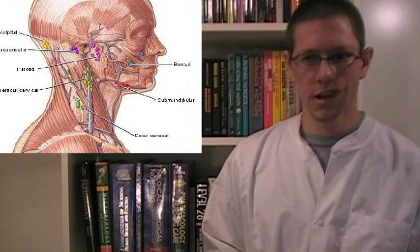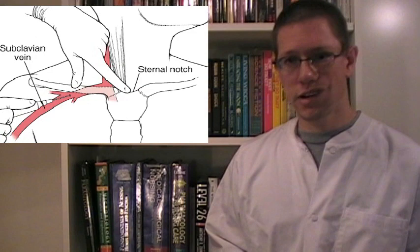There are two types of lymphoid organs, primary and secondary. The primary lymphoid organs supply the secondary lymphoid organs with mature lymphocytes already programmed to carry out specific functions, but not yet activated. More on that in the next episode.